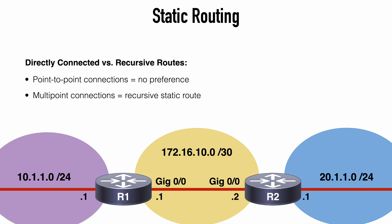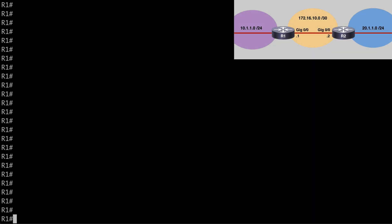If we're using a point-to-point interface or serial point-to-point interfaces, it really doesn't matter which one you use. If you're using a multi-point interface where multiple devices can be connected to a single interface, then it's preferable to use a next hop IP address — in other words, a recursive static route with multi-point connections. In a multi-point or broadcast network, using the outbound interface is not considered a scalable solution. Another advantage is that if there are multiple interfaces providing a path to the same destination, using recursive static routing may allow the static route to remain installed in the routing table even if that link fails and requires a different outbound interface.